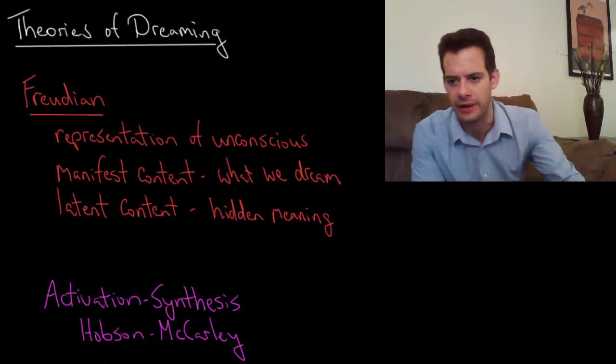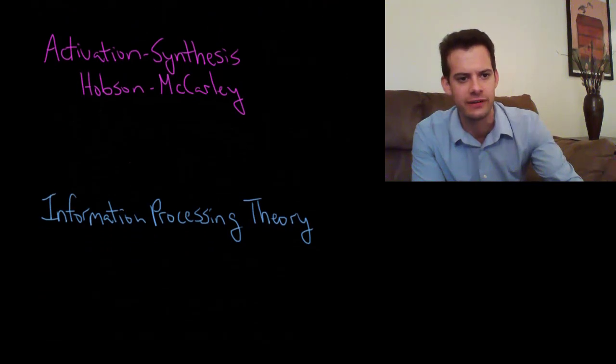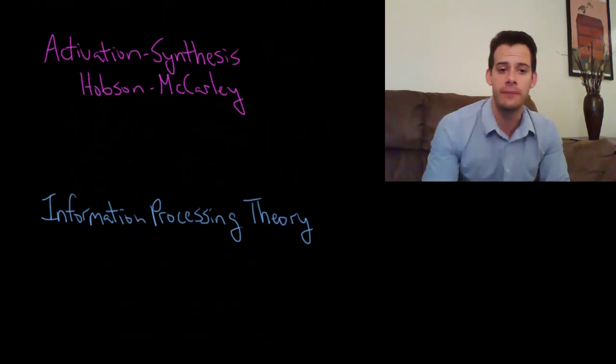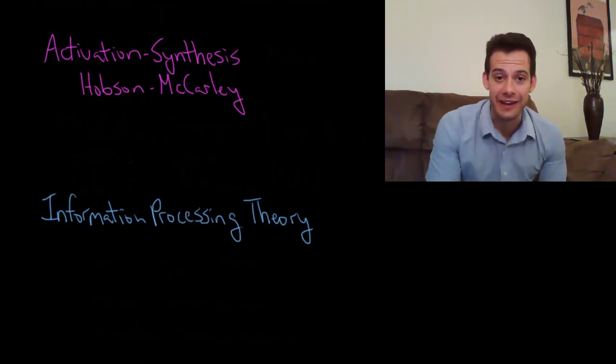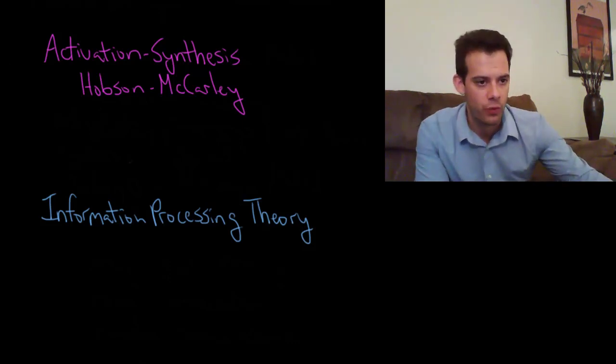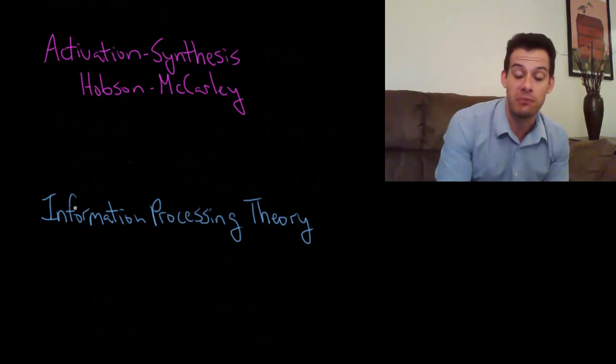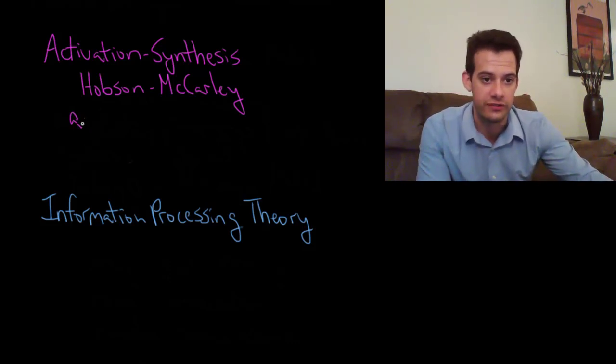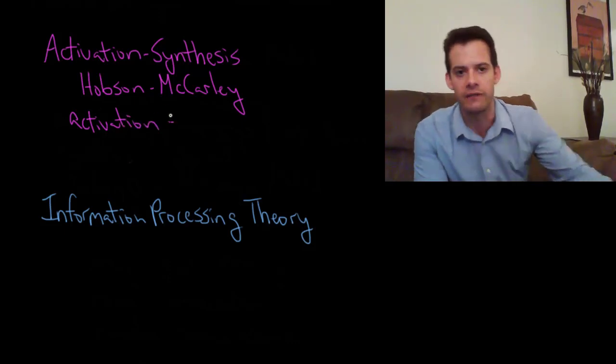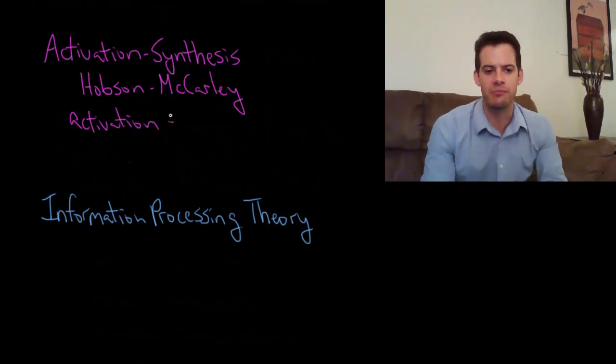This brings us to our next theory which was proposed in 1977 by Alan Hobson and Robert McCarley and this is called the activation synthesis model. This is a more scientific, brain-based approach for thinking about dreaming. Hobson and McCarley proposed that there's two main steps to the process of dreaming: activation and synthesis.